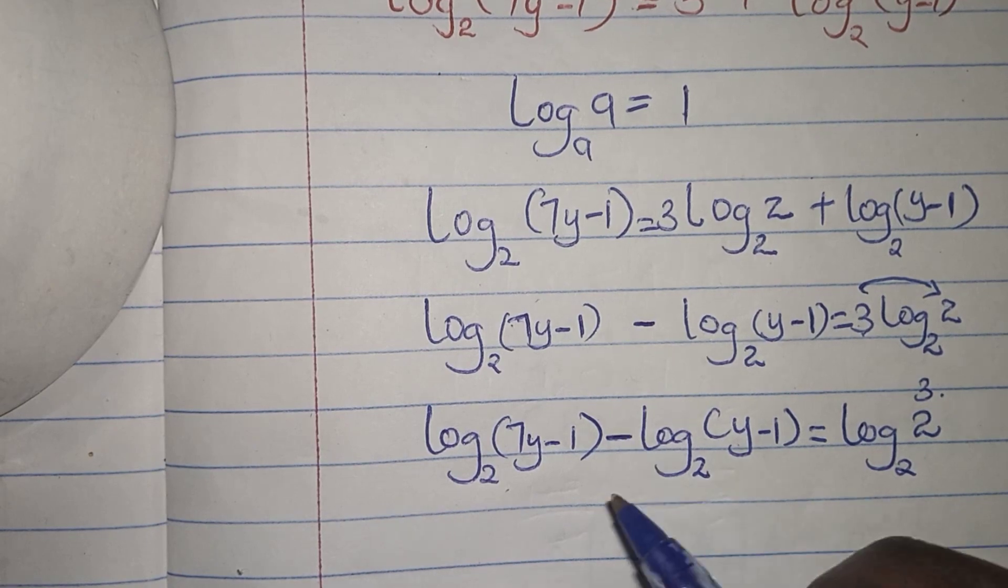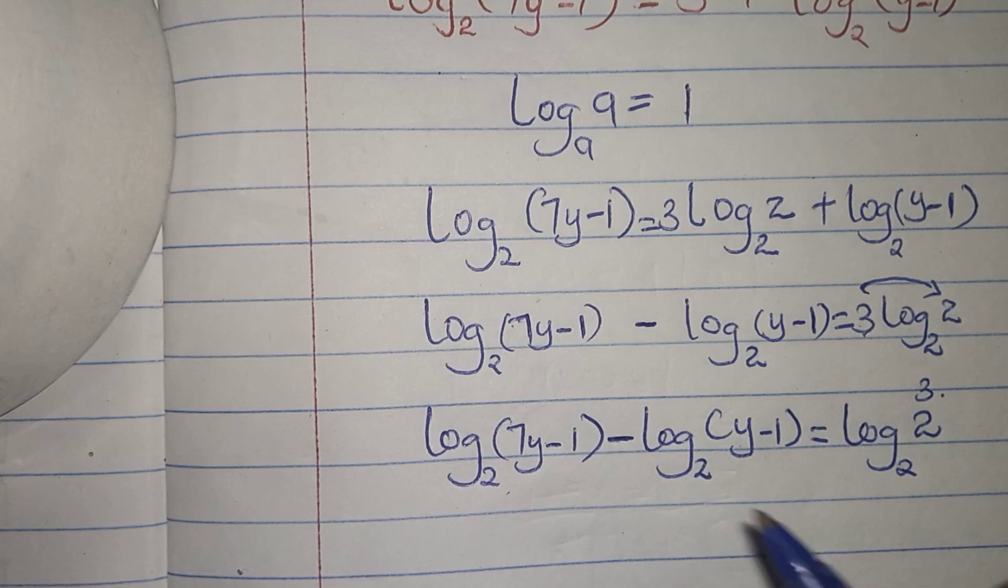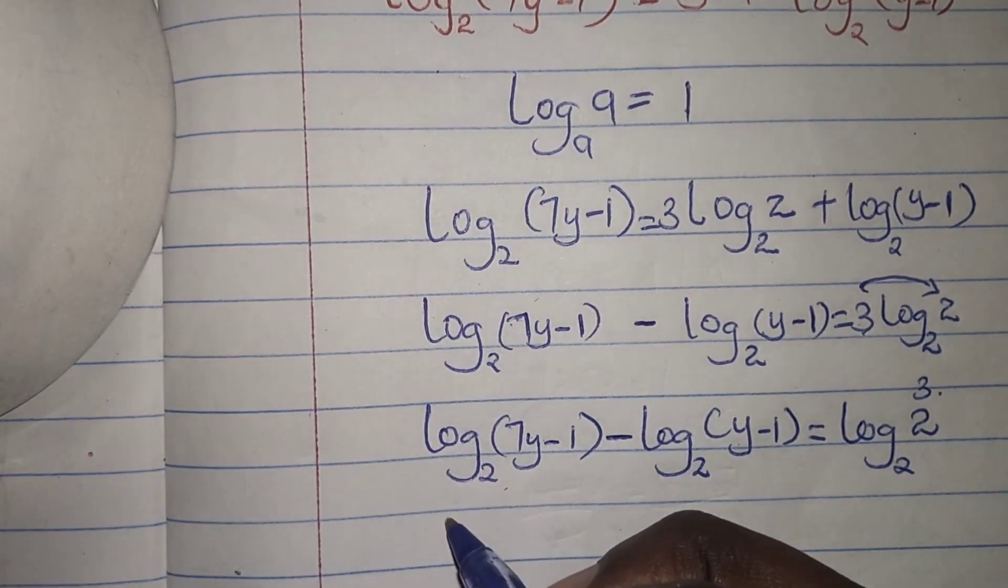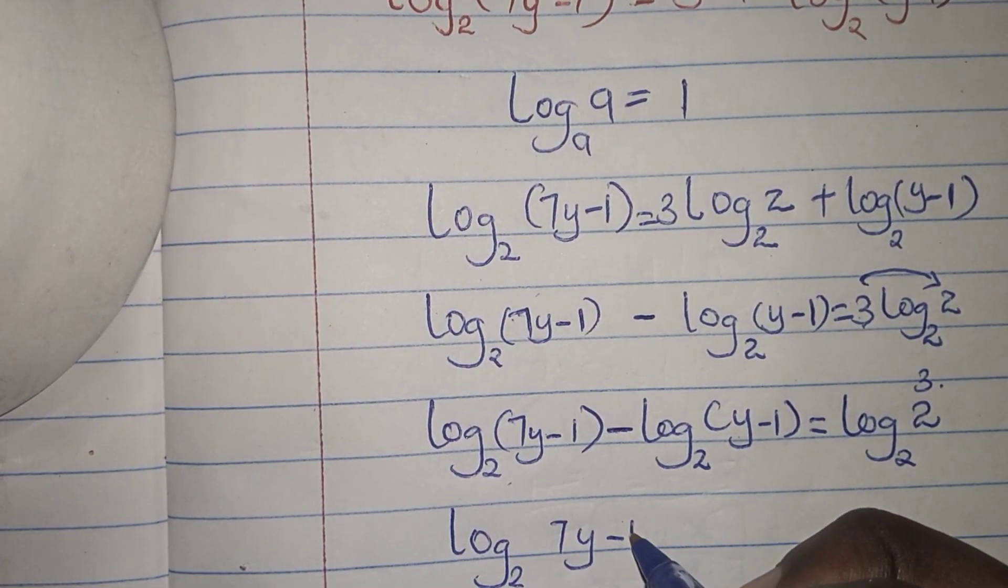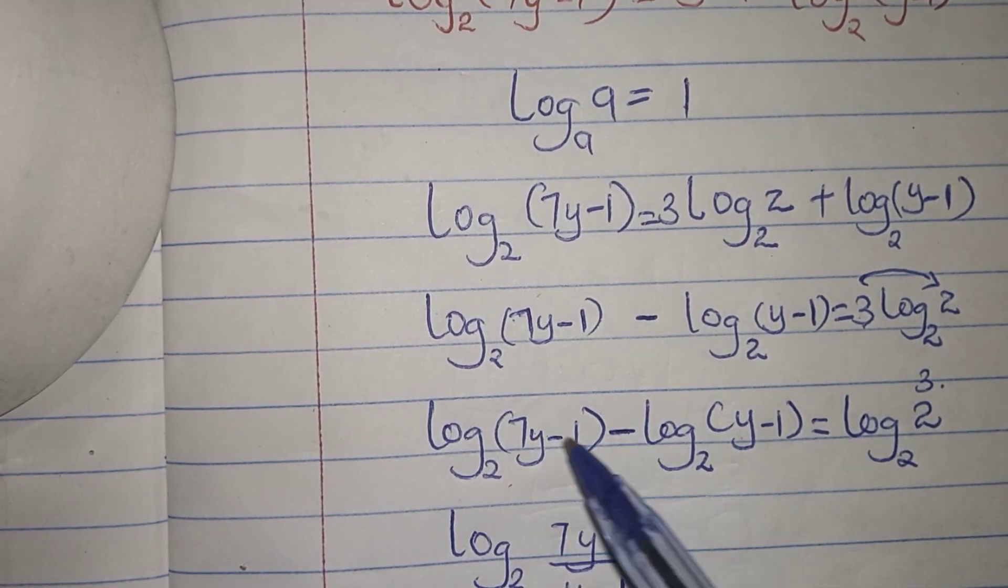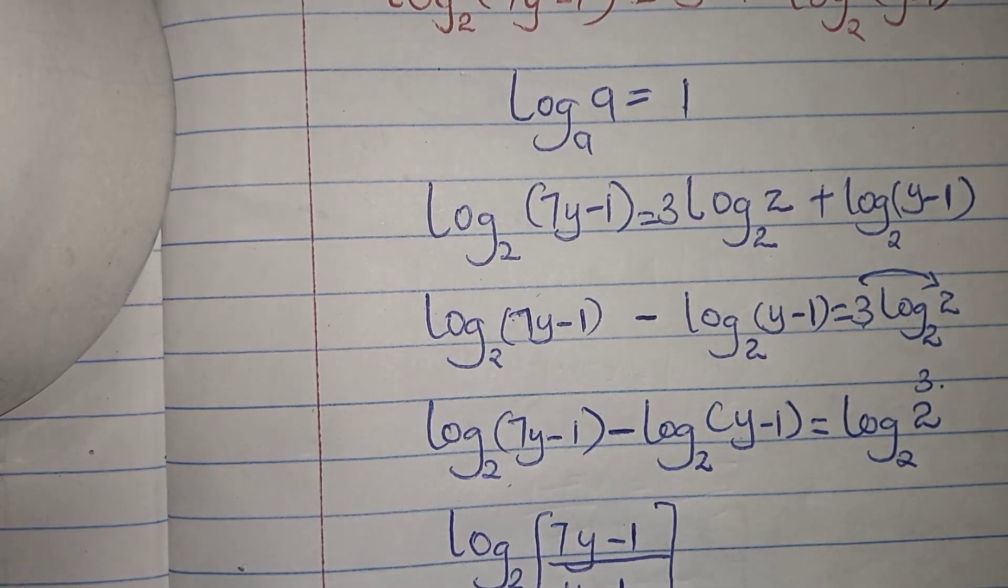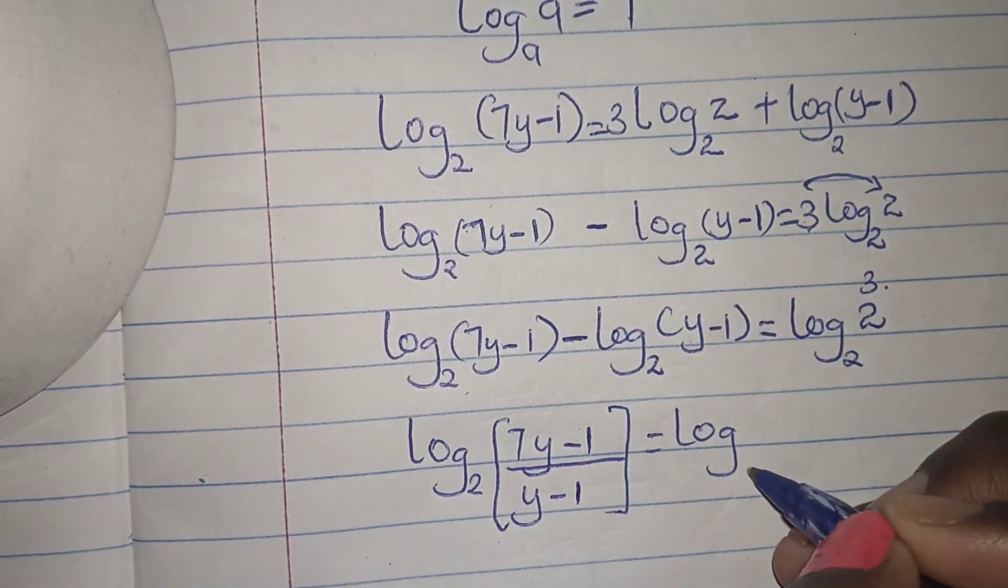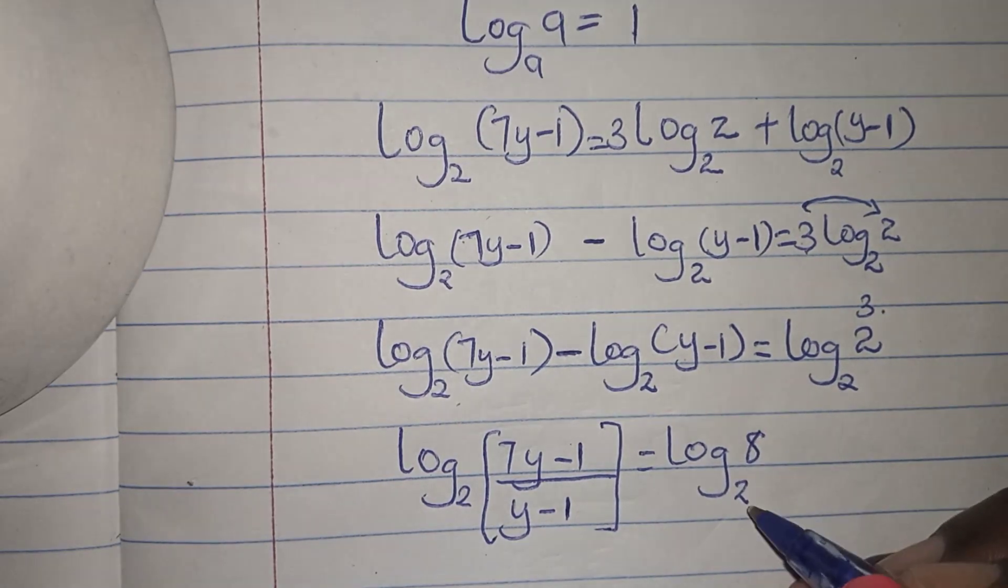When we have a subtraction sign and we have logs with the same base, we can divide the logs. So this is a law of logarithm where I'm going to divide these logs. Log base 2 of (7y - 1) divided by (y - 1) equals log base 2 of 8, since 2 to the power of 3 is 8.